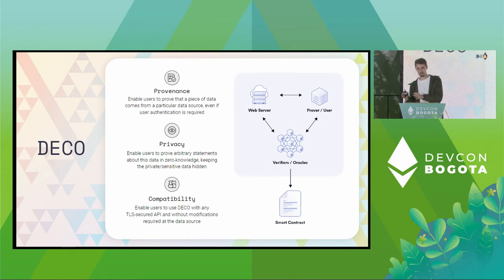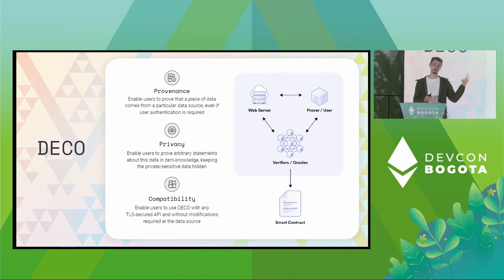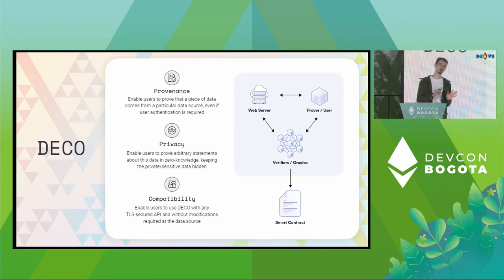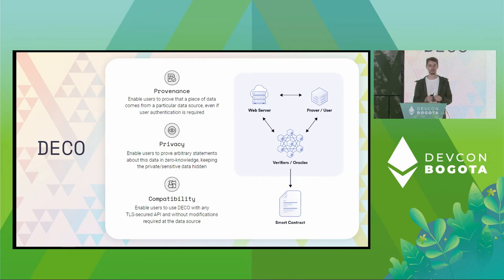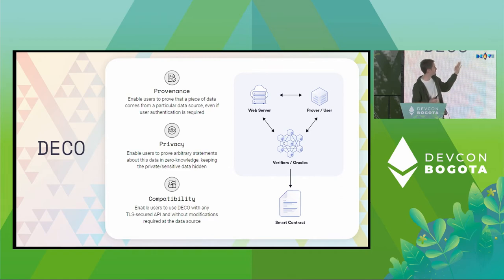What Deco enables the user to do is prove to these verifiers, and by extension to the smart contract, that some data indeed comes from a certain web server. For example, I can show that bank.com made some statement. We assume that this web server runs TLS, which is the standard protocol for securing communications on the web today — whenever you go to some website, you'll see a little lock icon in your address bar. So I can prove provenance — I can show that the data indeed comes from a certain source.